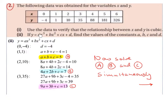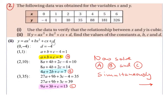Part 2: if y equals ax cubed plus bx squared plus cx plus d, find the values of the constants a, b, c and d. Starting with the point (0, −4), substituting x = 0 into the equation gives a×0³ + b×0² + c×0 + d, which simplifies to just d. Since y = −4, we get d = −4.